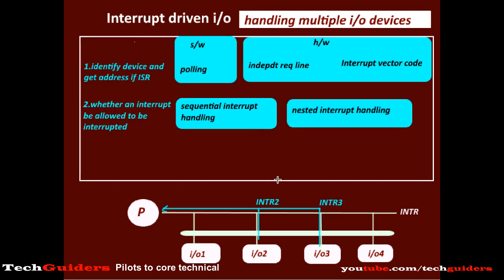If priorities are taken into consideration, the next decision concerns simultaneous interrupt requests. Since there are multiple I/O devices, there is a chance that more than one device may raise an interrupt almost simultaneously. Among the simultaneous requests, some may be of higher priority — for example, high-speed devices such as a hard disk should be given higher priority than low-speed devices such as a keyboard if both happen to raise an interrupt simultaneously. So, how do we ensure that the higher-priority device is serviced first when the processor receives multiple simultaneous interrupts?